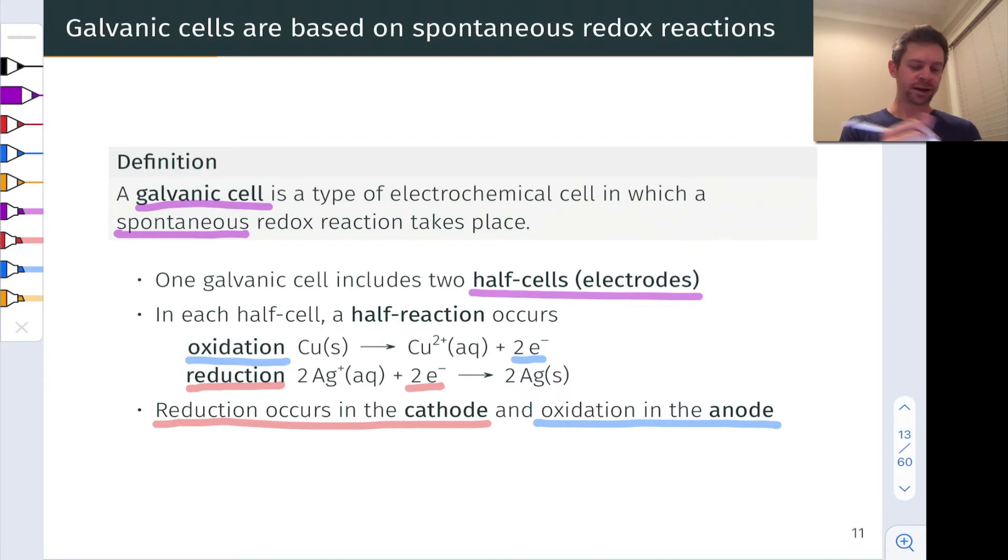A useful mnemonic for this is REDCAT, which reminds us that reduction occurs in the cathode, and ANOX, reminding us that oxidation occurs in the anode.